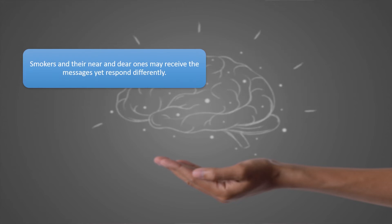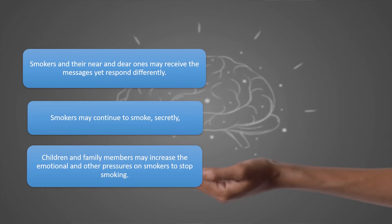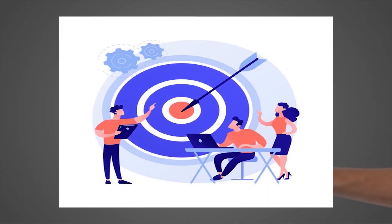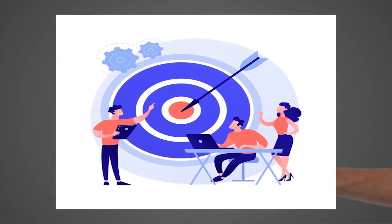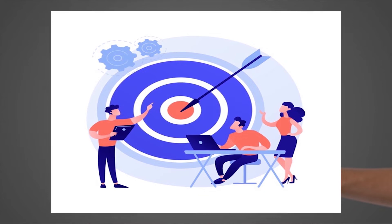Yet smokers and their near and dear ones may receive the same messages and respond differently. Smokers may continue to smoke secretly. Children and family members may increase emotional and other pressures on smokers to stop. Government rules may prohibit smoking in public places — there may be legislation. Informal norms may emerge because passive smoking is bad for others, so social pressure is exerted. If you smoke in public, passers-by may frown at you. Yet many people continue to smoke. A systems perspective helps us understand what facilitates or hinders our goals and helps us tailor communication to various actors in the system.